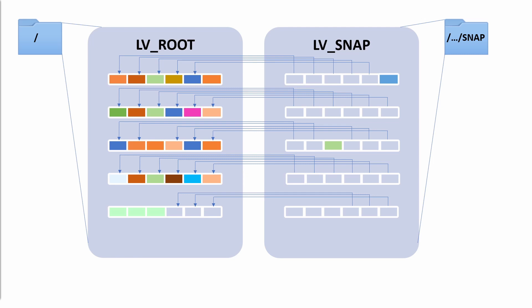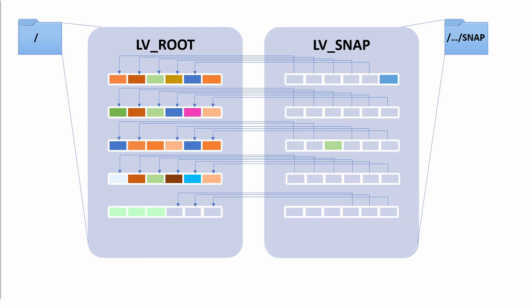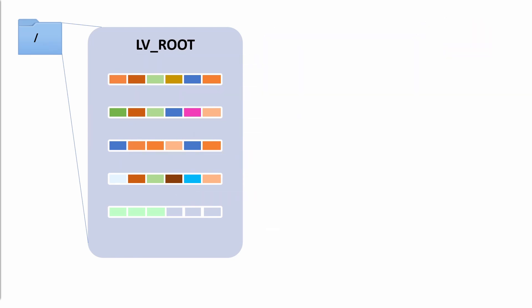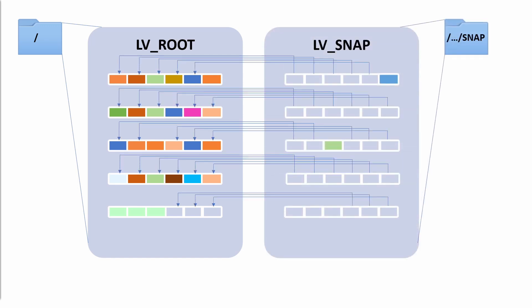So what can we do with a snapshot? If we want to keep the changes we've made to the root logical volume, it's simple — we just delete the snapshot logical volume. It goes away, nothing else happens, and our root logical volume stays the same.